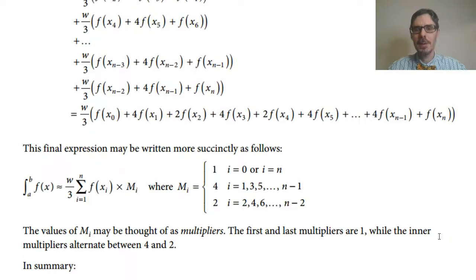We can write that again a little bit neater like this. This is Simpson's rule, this is what your calculator is doing. It's approximately w on three, because that was in front of every term, times f(xᵢ) times Mᵢ, where this number is 1 for the first or last term, 2 for the even terms in between, and 4 for the odd-numbered terms in between.